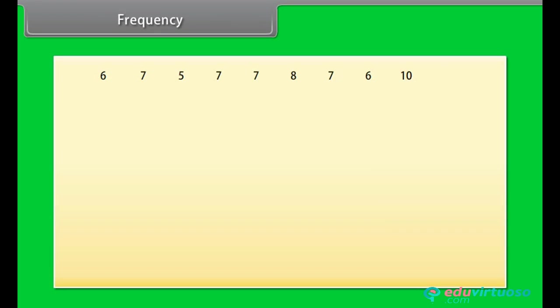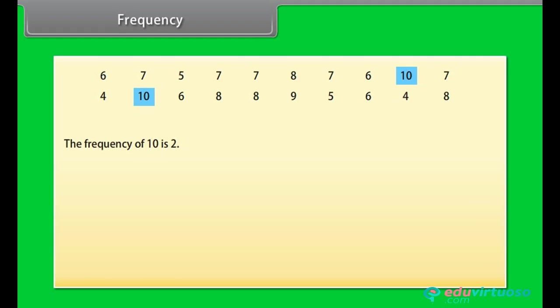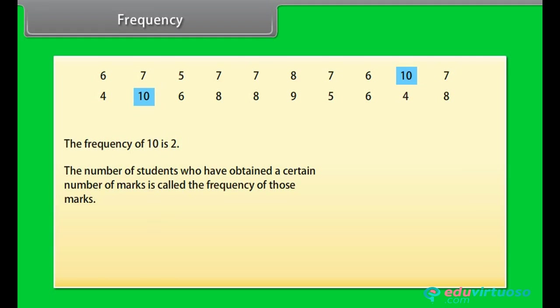Frequency: Look at these numbers — these are the marks obtained by 20 students in Science. The highest number scored here is 10. We can see that two students have scored 10 marks, so the frequency of 10 is 2. The number of students who have obtained a certain number of marks is called the frequency of those marks.